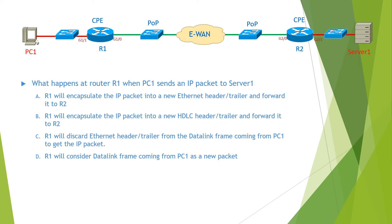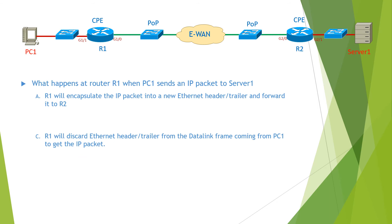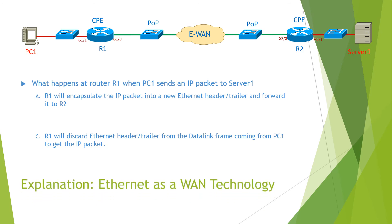In order to send an IP packet to Server 1, R1 will encapsulate the IP packet into a new Ethernet frame. Upon receiving the Ethernet frame coming from PC1, R1 has to discard the Ethernet header and trailer to get the IP packet. Because this link is Ethernet, R1 will encapsulate the IP packet into a new Ethernet header and trailer and send it to R2. Therefore, the answers for this question are A and C. You can find the detailed explanation in the video Ethernet as a WAN Technology.